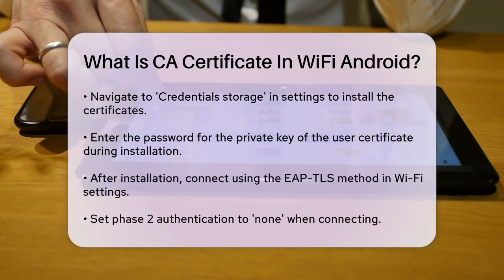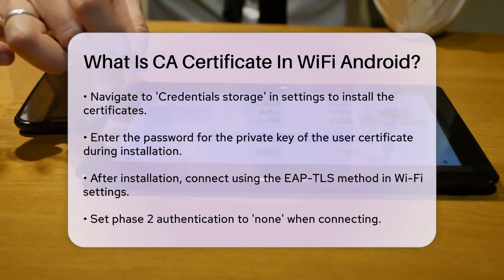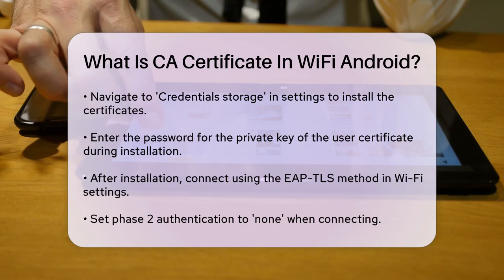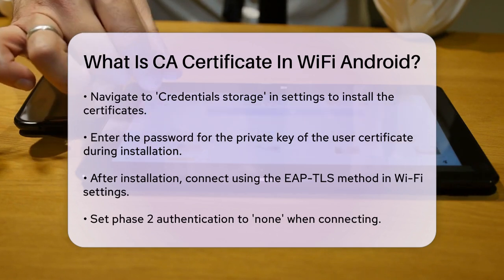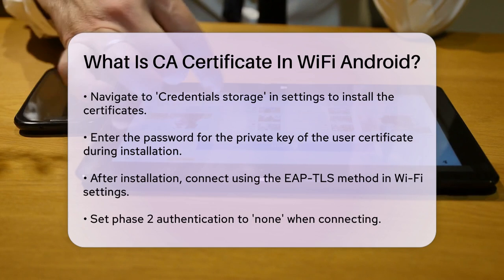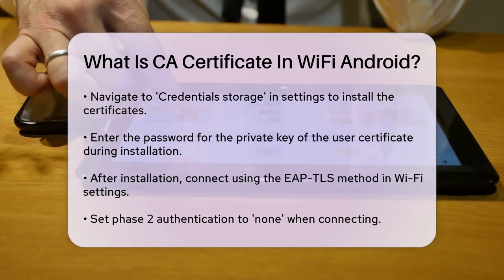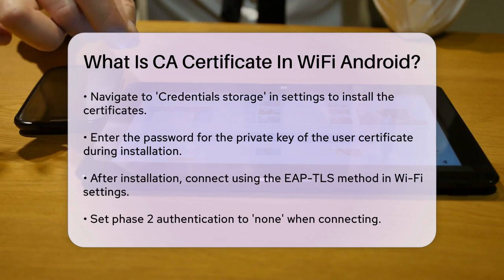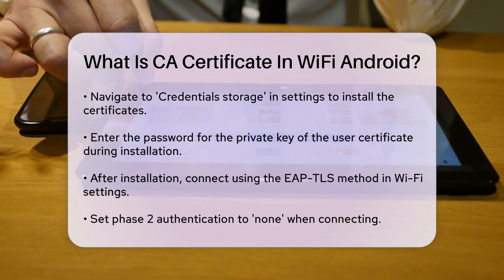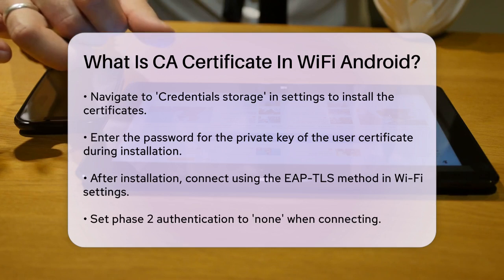Once these certificates are installed, you can connect to the wireless network using the EAP-TLS method. Go to your Wi-Fi settings, select the network you want to connect to, and choose EAP-TLS as the EAP method. Set the Phase 2 authentication to None. Select the root CA certificate and the user certificate you installed earlier. Enter your username and save the settings.